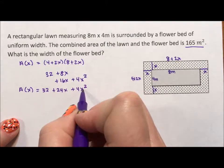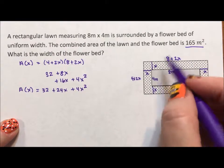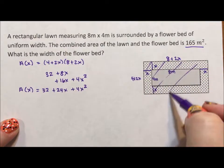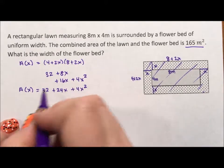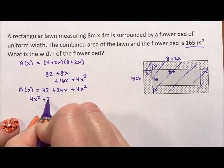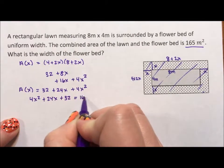So here's my generic. We're looking for x knowing that the combined full area, what I just found, is 165. I'm going to rewrite this as 4x squared plus 24x plus 32 and say that it equals 165.